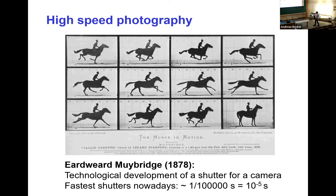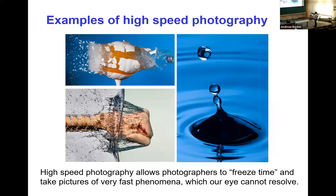Nowadays the fastest camera shutters are about 10 to the minus five seconds — pretty fast. You can make wonderful photos. I encourage you to look up ultra-fast photography online. Some examples I found quite interesting: a bullet going through an object, water droplets, a fist pounding into water. These very fast phenomena we can now resolve with photography.